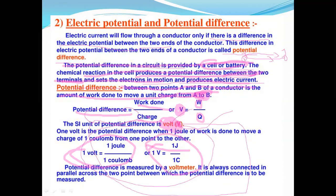Potential difference is measured using a voltmeter, which is always connected in parallel in a circuit. Electric current is measured using an ammeter, which is always connected in series.